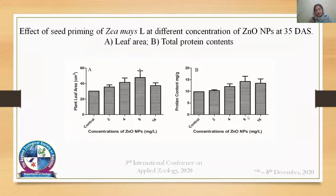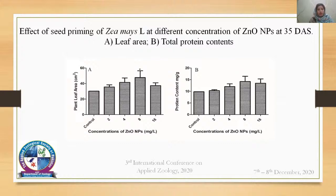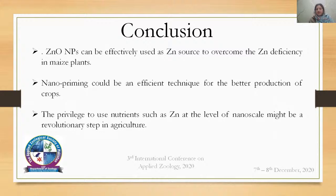The same trend was observed for leaf area and total protein content of the plant — maximum at 8 mg per litre. This may be because at higher concentrations, zinc nanoparticles have a negative impact and can reduce plant growth. In conclusion, zinc oxide nanoparticles can be effectively used as a zinc source to overcome zinc deficiency in maize plants, and nanopriming could be an efficient technique for better crop production. Zinc can be used at the nanoscale as a revolutionary staple in agriculture. Thank you.